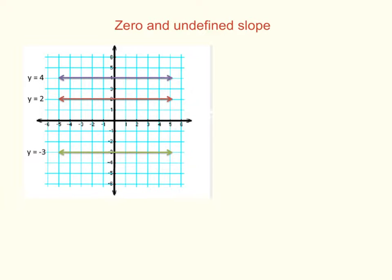Here's a screencast on slope of zero and undefined lines. So here we have three horizontal lines. We know that for horizontal lines, the slope is zero.